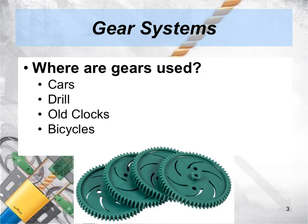So there's a lot of places where gears are used. One example is cars. Do you know what part of a car uses gears? The transmission uses lots of gears to shift from first to second to third gear. Drills use gears. Old clocks use gears. And bicycles use a type of gear that's connected by chains.